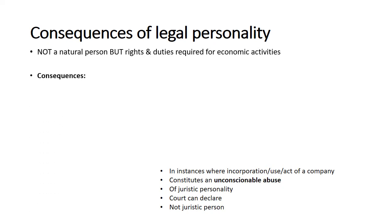So what are some of the consequences of a company assuming a separate entity existing apart from its members? Well, a company can acquire rights and duties in its own name. For example, it can acquire or accumulate assets, it can conclude contracts in the name of the company, and sue and be sued in the name of the company.